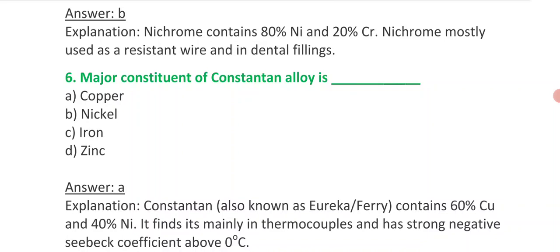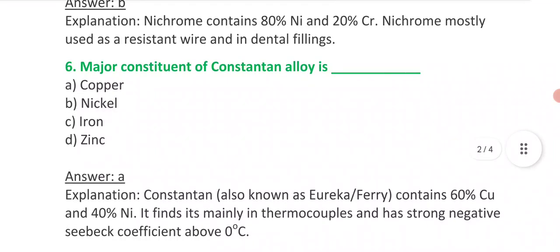Constantan or Eureka or Ferry contains 60% copper and 40% nickel. And we can find it in thermocouples. It has very strong negative Seebeck coefficient above 0 degree Celsius.